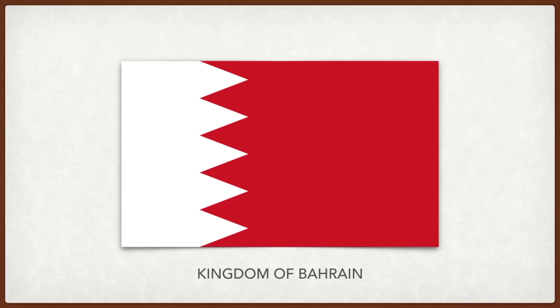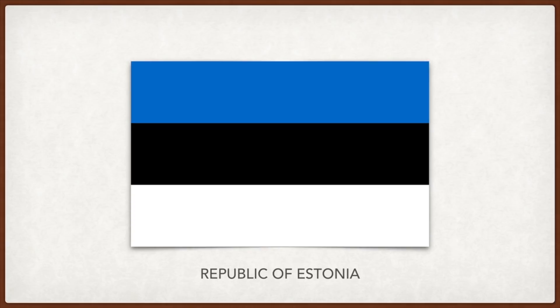Trinidad and Tobago: black is for the dedication to unity, strength, and purpose; white is for purity and the sea which unites the two main islands; and red is for the warmth of the sun, the vitality of the people, and friendliness and courage. Estonia: the blue is for the sky, black is for the land, and white is for aspiration toward freedom.